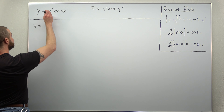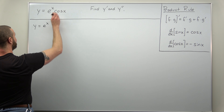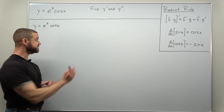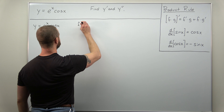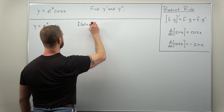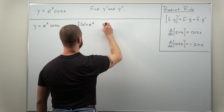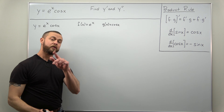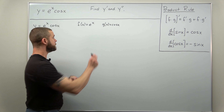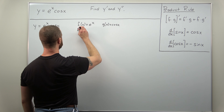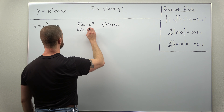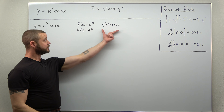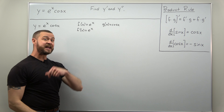We have our function as e to the x times cosine of x, so identify the pieces: f of x as e to the x and g of x as cosine of x. The two derivatives here are simple — f prime comes out to e to the x, and the derivative of cosine of x is negative sine of x.